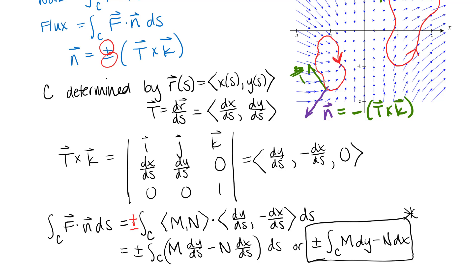There's one thing to discuss before the example. Our textbook only does flux across closed curves — curves that make a complete loop where the starting and ending points are the same. But it is possible to do flux across non-closed curves, and we will do that when we do flux across surfaces. For a non-closed curve, the only difference is that you need to make a choice about which direction the n vector points — there is no convention of inward or outward. You just choose a direction for n and then pick plus or minus T cross k accordingly.